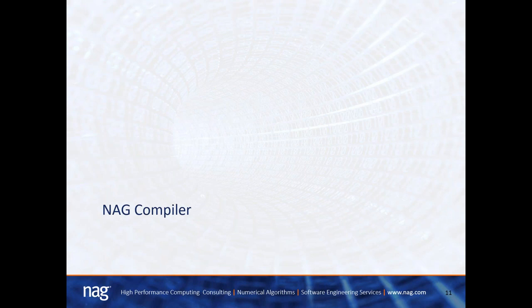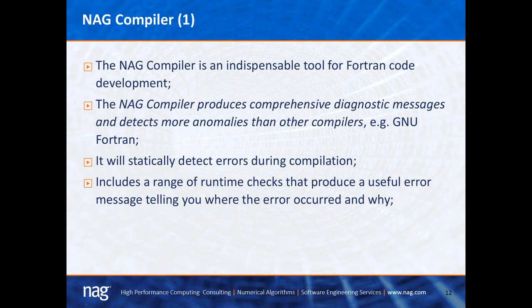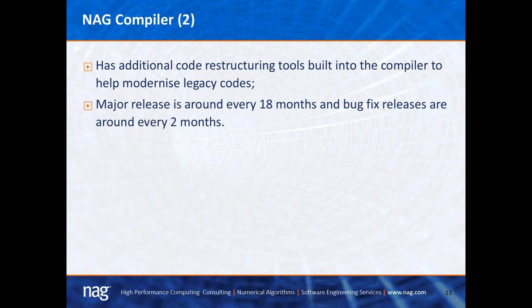I believe the NAG compiler is an indispensable tool for Fortran code development. The compiler produces comprehensive diagnostic messages and detects more anomalies than other compilers such as GNU Fortran. It will statically detect errors during compilation, and it also includes a range of runtime checks that produce useful error messages telling you where the error occurred and why. It also has additional tools that will help you restructure legacy codes into modern codes. The major release of the NAG compiler is around every 18 months, and bug fix releases are around every two months.